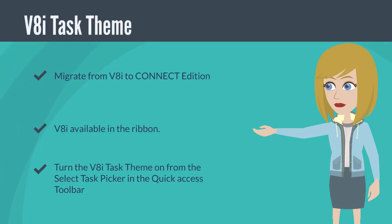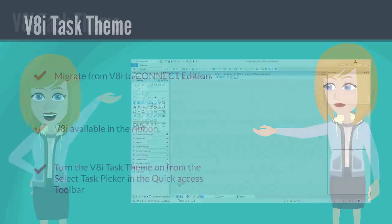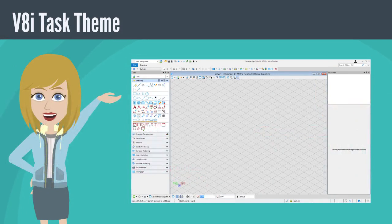If you are moving to Connect Edition from V8i and are not familiar with the ribbon, you can use the V8i task theme in Connect Edition to quickly access the tools as you become accustomed to the new interface. You can turn the V8i task theme on from the select task picker in the quick access toolbar while in the task navigation workflow. The V8i task theme is a close replication of the V8i user interface.